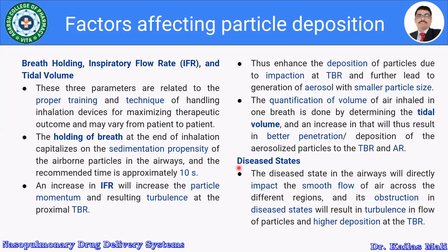The diseased state also affects particle deposition. The diseased state in the airways will directly impact the smooth flow of air across different regions — the trachea-bronchial region or alveolar region. Its obstruction in the diseased state will result in turbulence in the flow of particles and higher deposition at the trachea-bronchial region, meaning more particles are retained there.